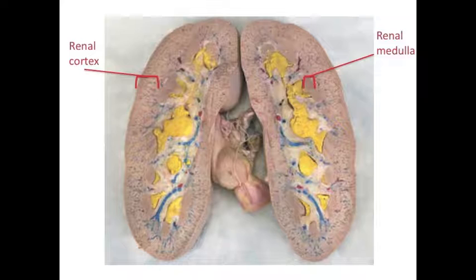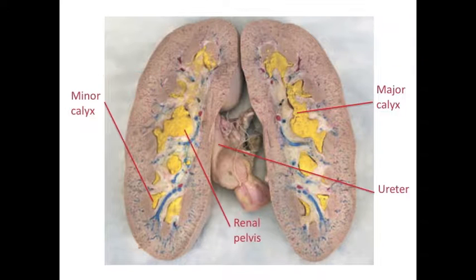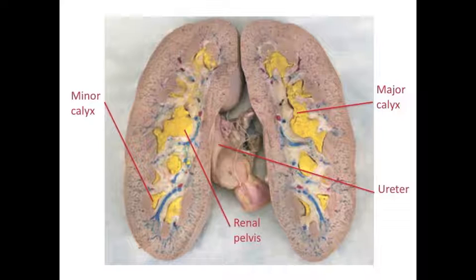The cortex is the site of glomerular filtration. The medulla houses the collecting ducts, which pass filtrate out towards the ureter. The collecting ducts first drain into minor calyces, shown here as a minor calyx. The minor calyces then merge into major calyces, shown here as a major calyx.